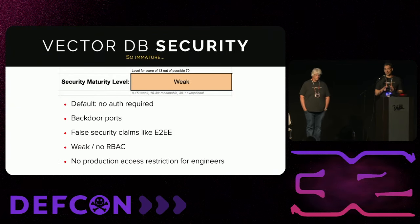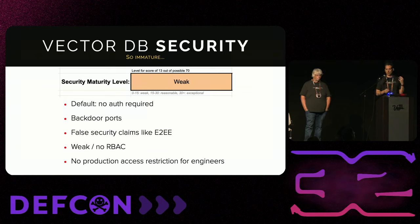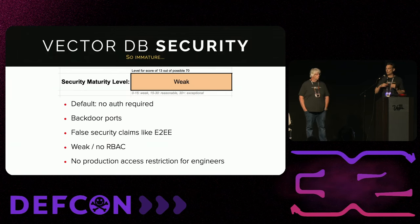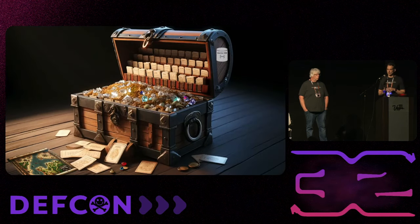Let's talk about these new vector database companies. They probably have good security, right? Actually no — super immature. Two of them have no authentication required by default, making the same mistakes as Elasticsearch and MongoDB years ago. One has internal services with no authentication protection, so a misconfigured firewall means direct access to data. Two of them claim to have end-to-end encryption when they only have TLS in transport. The point is that these vector database systems are like total treasure troves of information.